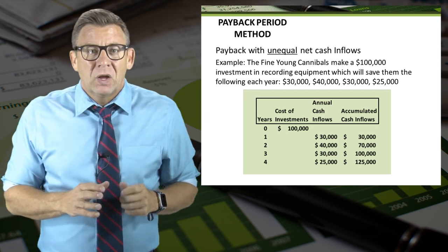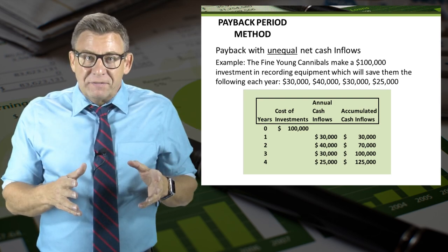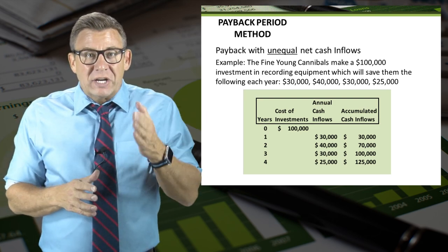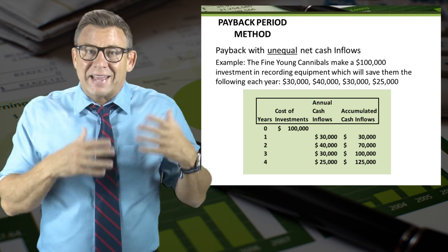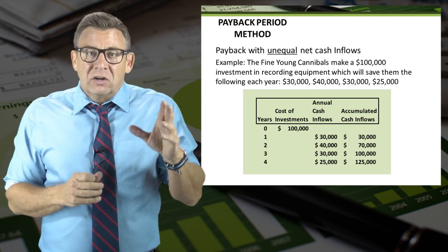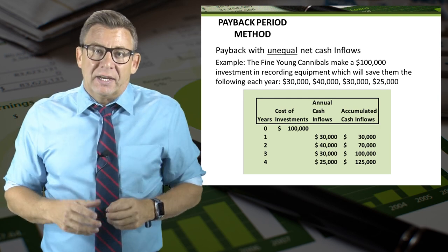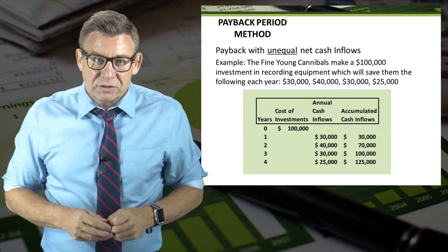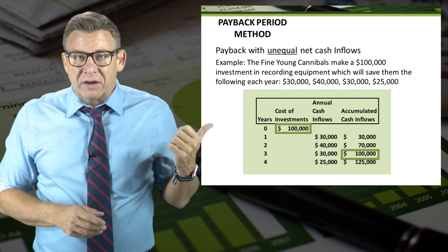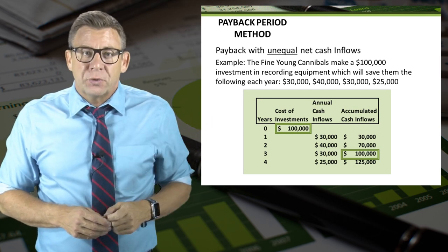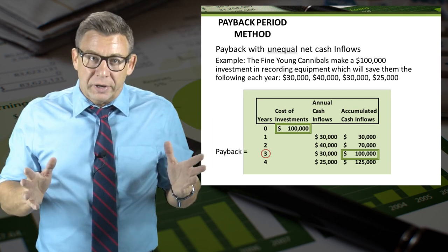I made this one in Excel. I list the years, the amount of initial investment — which happens in year zero, or in other words, at the beginning — the yearly net cash inflows, and the accumulated net cash inflows. In this example, I recover $100,000 in year three, so payback is three years.